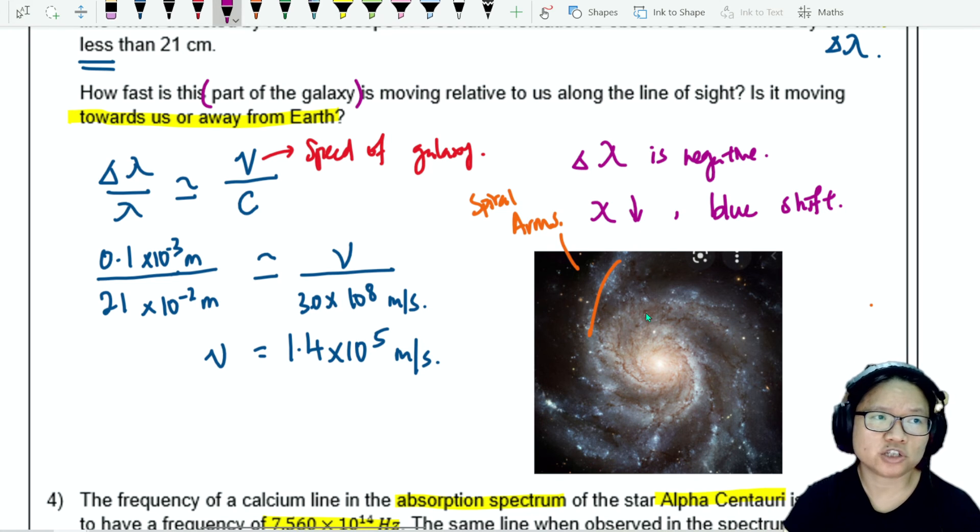From here, because the change in wavelength is negative, or in other words, lambda decrease, you can say that the PM radiation is blue shifted.